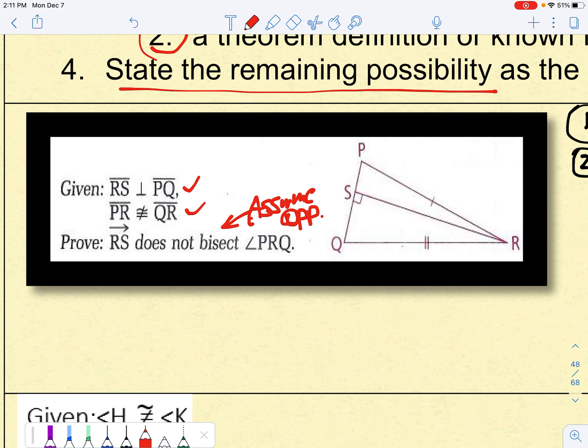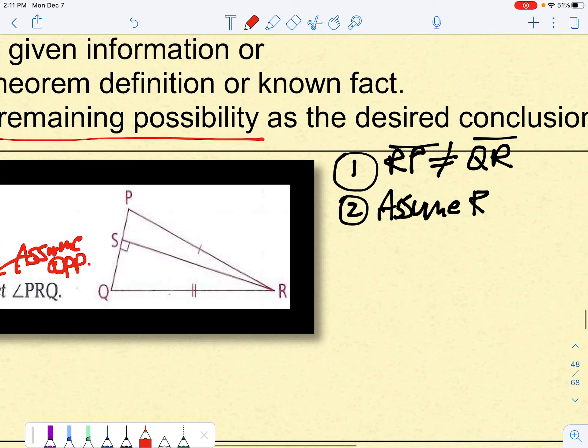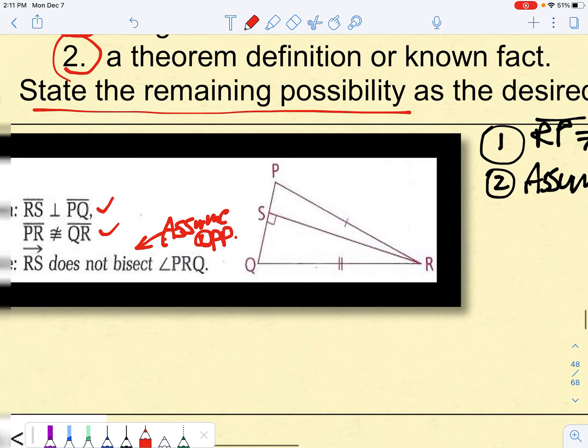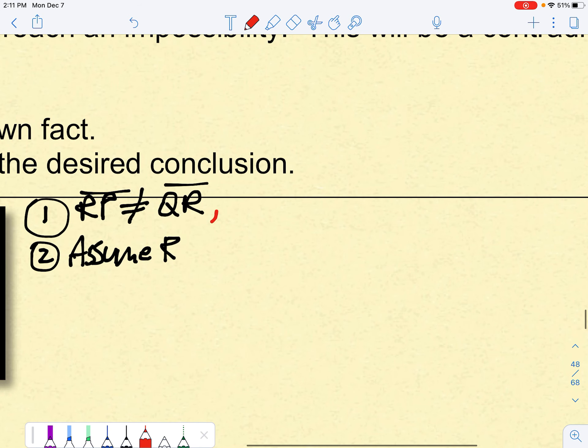And that's going to lead us to a contradiction. It's going to take us a few lines here. All right? So we assume that that is true, and then we also assume that RS and PQ are perpendicular.